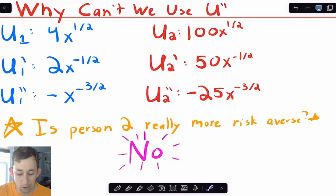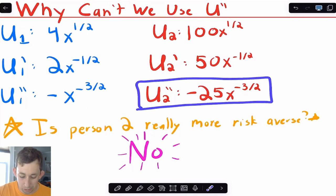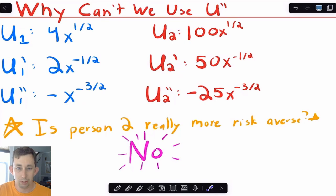And so if I know that these are the same in terms of preferences, let's see what happens if I just use the second derivative. Well, I've taken the first and second derivative. So notice, if I just use the second derivative, this would tell me that person two is much more risk averse than person one. But we know that's not the case. We know they have the same exact preferences, so they should have the same amount of risk aversion. And so this Arrow-Pratt measure needs to have the same value for both of these utility functions. And so what can we do?